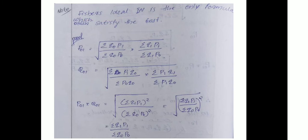Fisher's index number is the only formula that satisfies the factor reversal test. Fisher's ideal index number alone satisfies the factor reversal test. For proof, Fisher's index number P01 (ignoring the factor 100) equals the square root of (summation Q0·P1 / summation Q0·P0) into (summation Q1·P1 / summation Q1·P0).